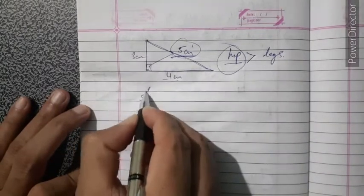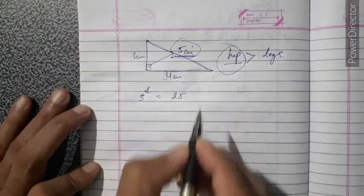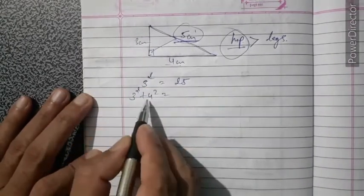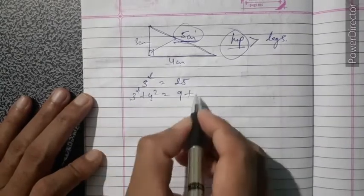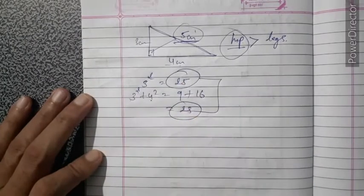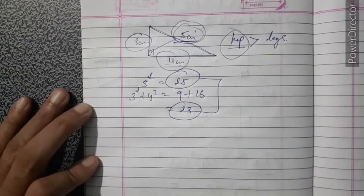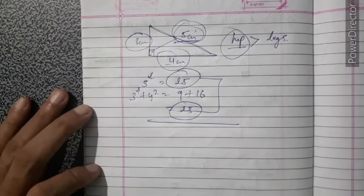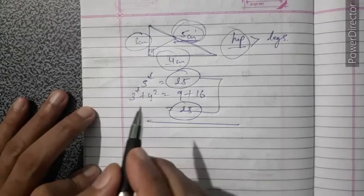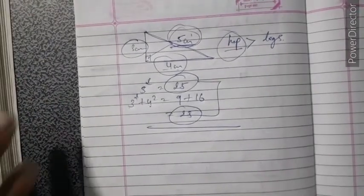Check: the highest side is 5, so take 5² = 25. Now, 3² + 4² = 9 + 16 = 25. Since both sides are equal, the given measurements form a right angle triangle. That is the Pythagoras property for a right angle triangle.